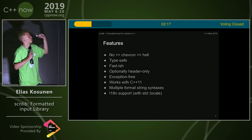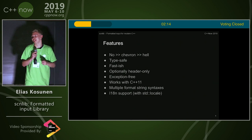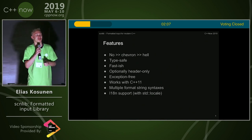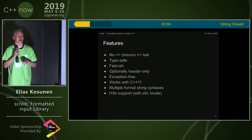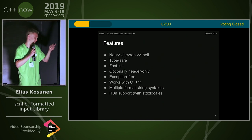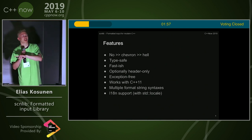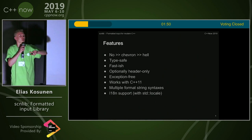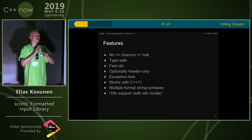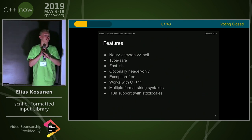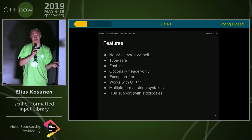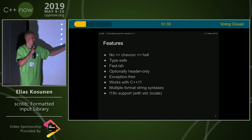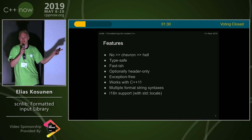Feature overview: no shape around — typesafe, fast-ish, though I haven't paid any attention to that yet. Optionally header-only if you like that. Exception-free — it returns unexpected. Works with C++11, or C++14 if you want to use ranges. It also has scanF-like syntax if you want to port old code to this — it's a stepping stone. And std::locale, if you can call that internationalization support.